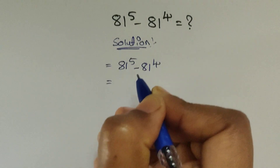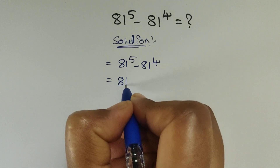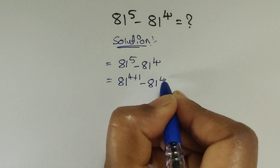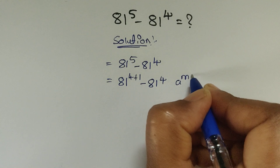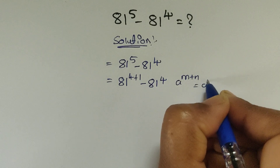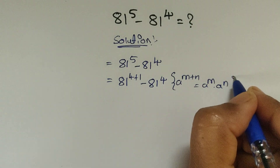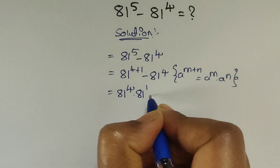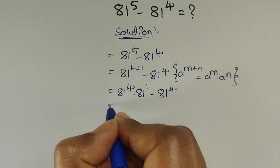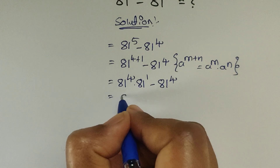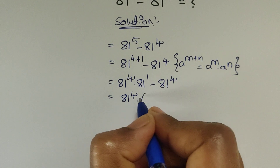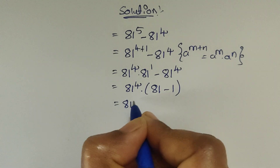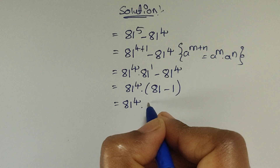So 81 to the power of 5, we can write this as 4 plus 1, minus 81 to the power of 4. We can apply the formula: a to the power of m plus n equals a to the power of m times a to the power of n. So here we write 81 to the power of 4 times 81 to the power of 1, minus 81 to the power of 4. These two terms have a common factor of 81 to the power of 4, so we take it out as common: 81 to the power of 4 times (81 minus 1), which equals 80.